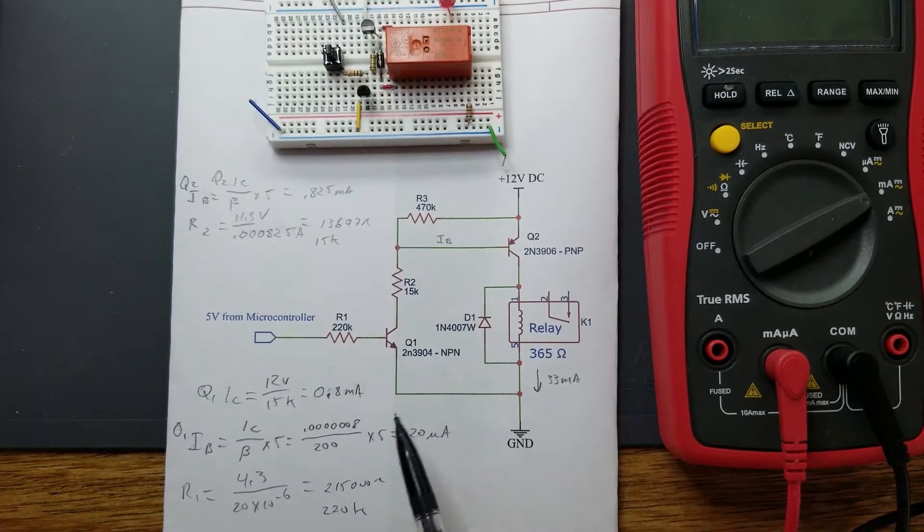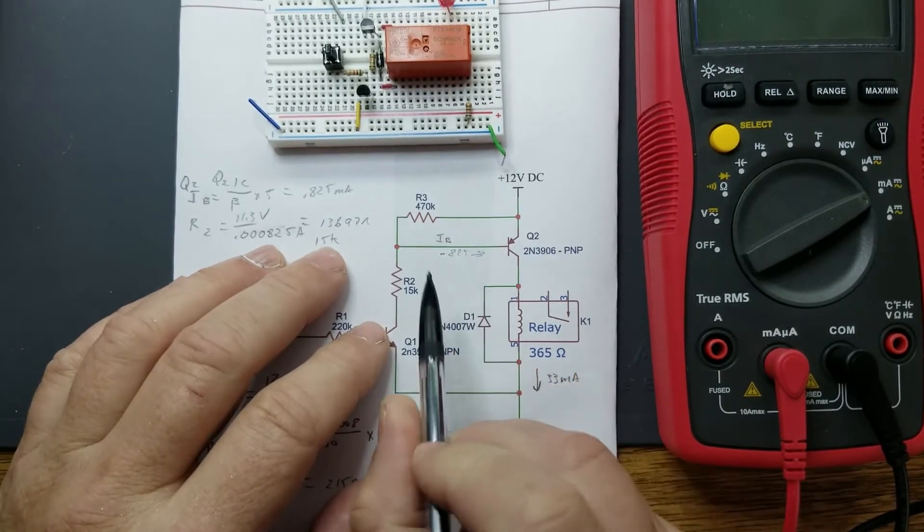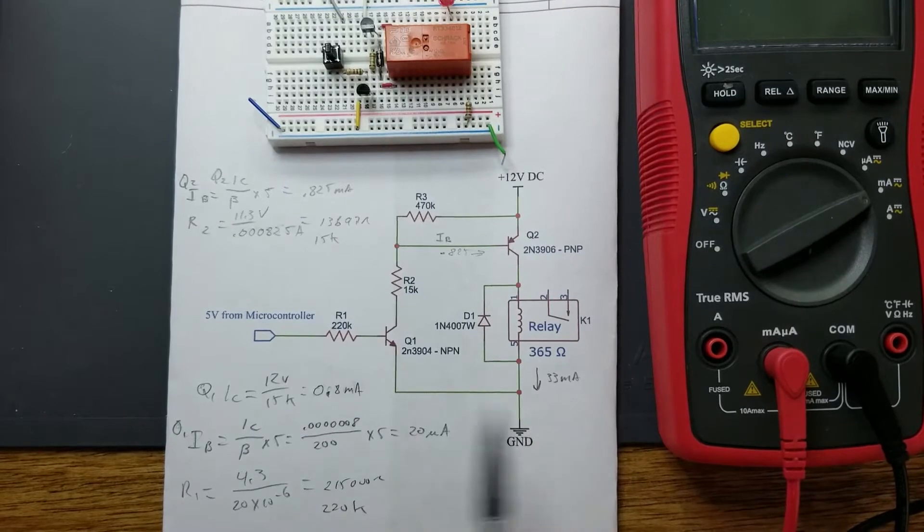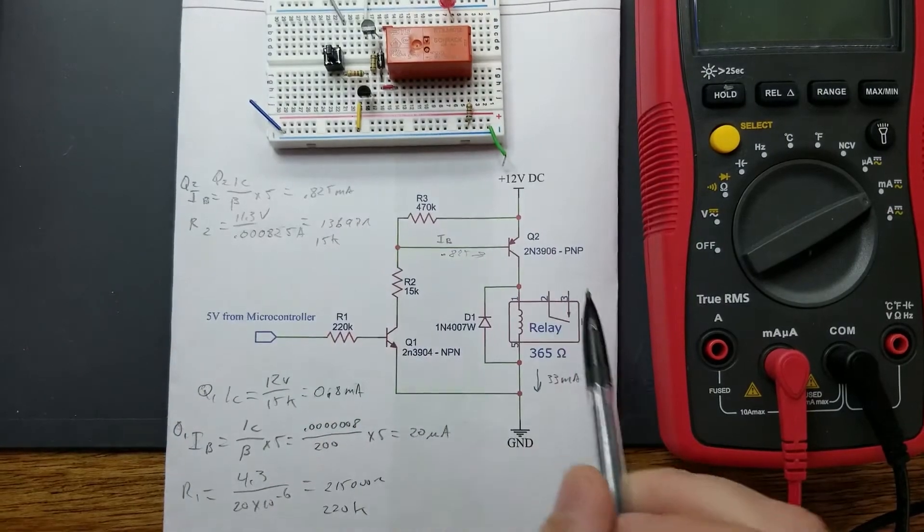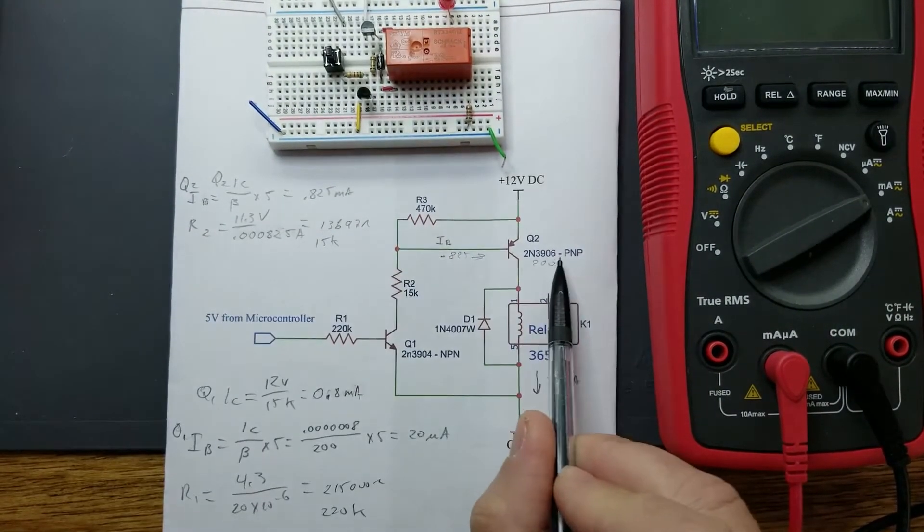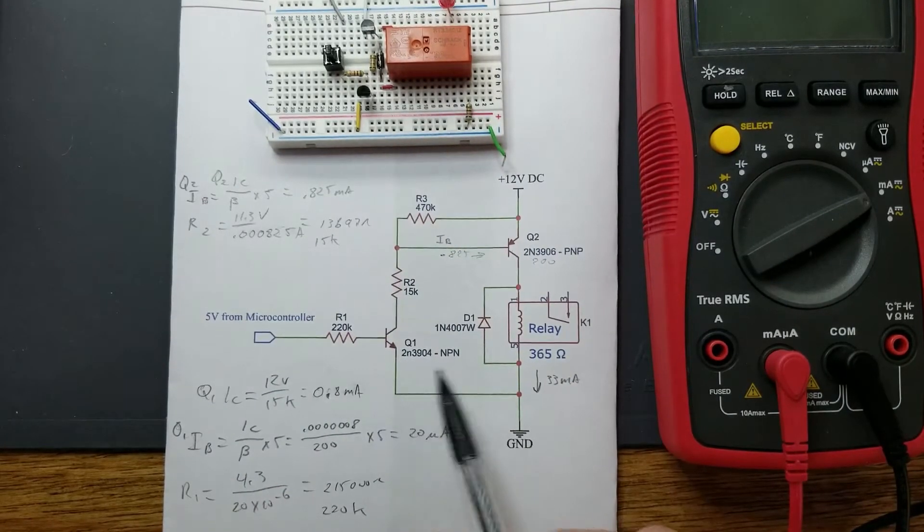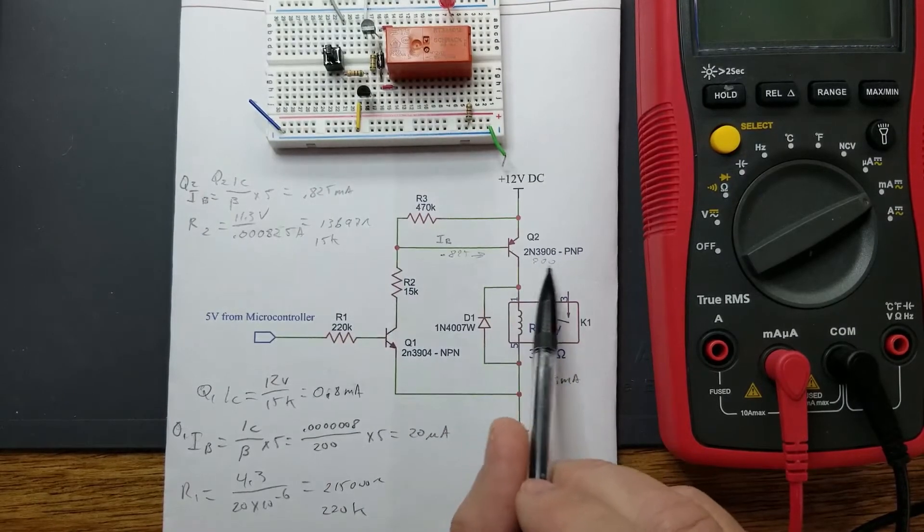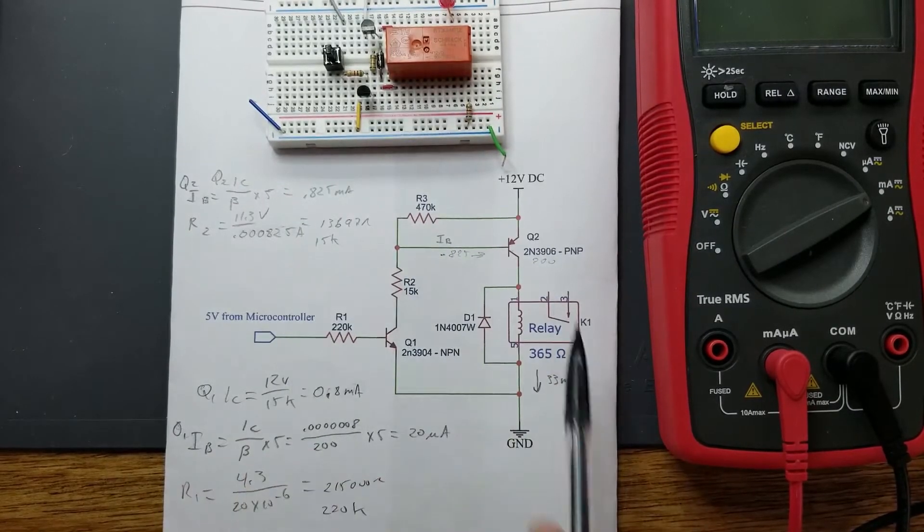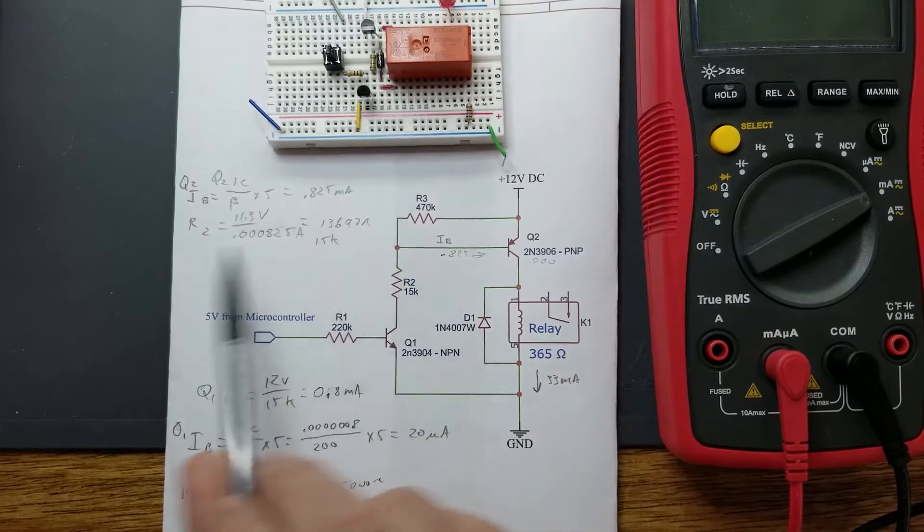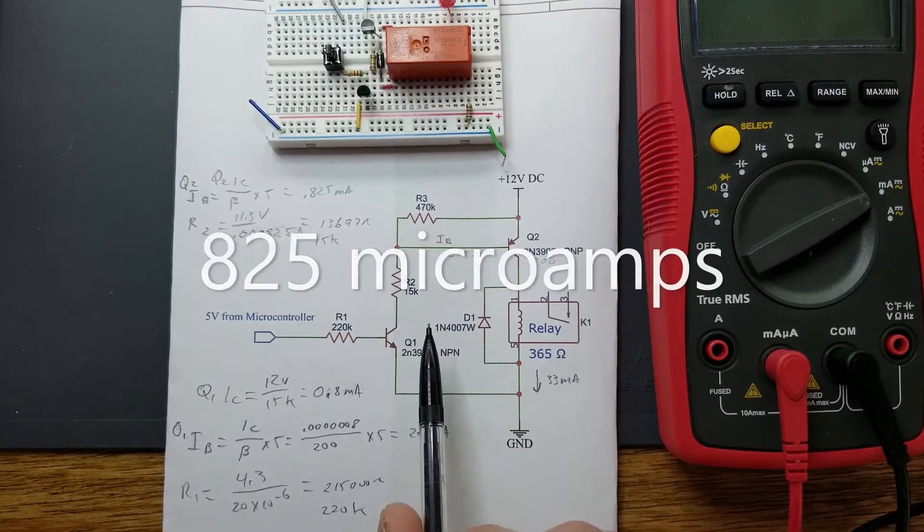Just like the previous circuit, we have 33 milliamps passing through here. We have calculated that 825 microamps or 0.825 milliamps is needed to turn this transistor on. That again is your Ic divided by the beta, which is 200 typically. This is a 2N3906, which is the PNP counterpart to the 2N3904. A beta of around 200 is fairly typical, so you got your current divided by that, multiplied times five. That's the rule I use.